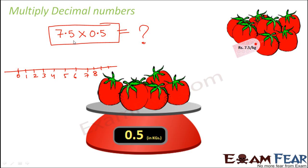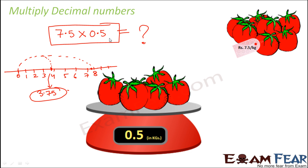Now what do we mean when we say 7.5 multiplied by 0.5? That means 7.5 is added 0.5 times. Now 0.5 is basically 1 by 2, that is half. So 7.5 is added half times. One times 7.5 would mean from 0 you go till 7.5, so 7.5 into 1 would be there. But here it is 7.5 into half, so instead you go somewhere exactly midway, which corresponds to the value 3.75. And that is the product of 7.5 and 0.5.